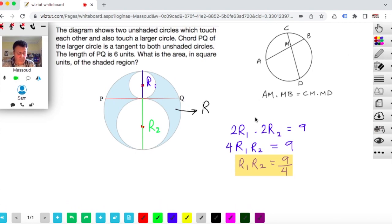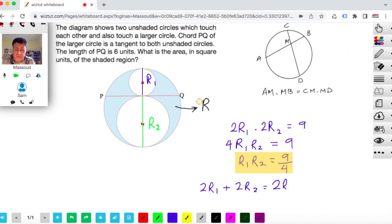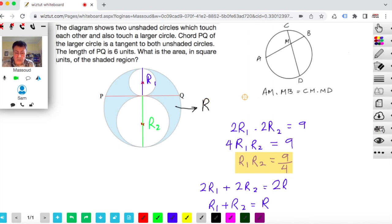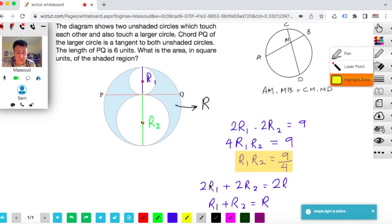Now, the other thing that we do know is that this diameter here, so 2R1s, this diameter, plus this green line, which is 2R2s, that will actually be equal to the diameter of the outer circle. So 2 of that, 2Rs. So if I simplify this, you'll see that I get R1 plus R2 is equal to R. So I'm going to use this as well.